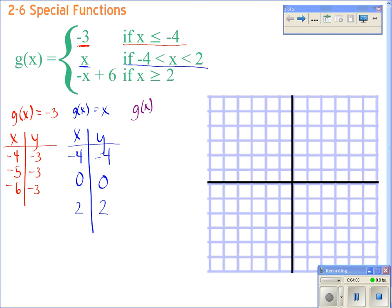Last one, g of x is equal to negative x plus 6, table of values. We need to pick numbers that are greater than or equal to 2. So we've got 2, we'll pick 3, and we'll pick 4. If we put this 2 right here, what is our answer going to end up being? 4. Put a 3 right here, we get 3. Put a 4 here, we get 2.